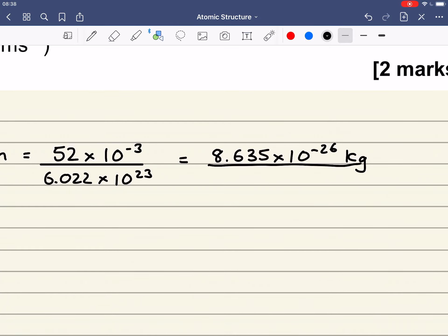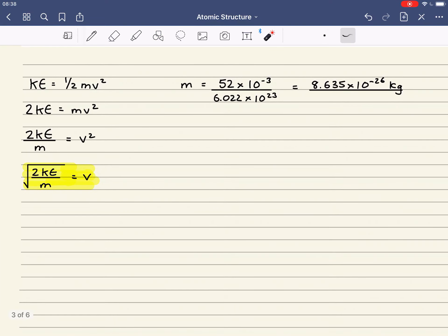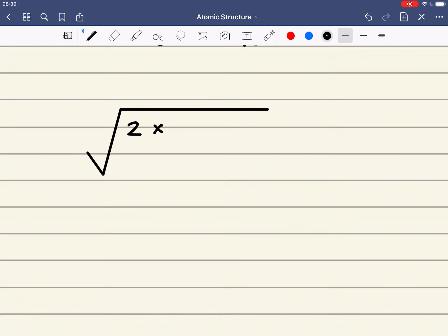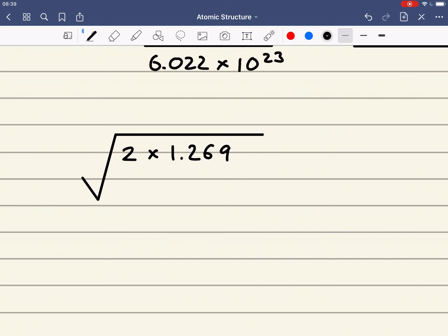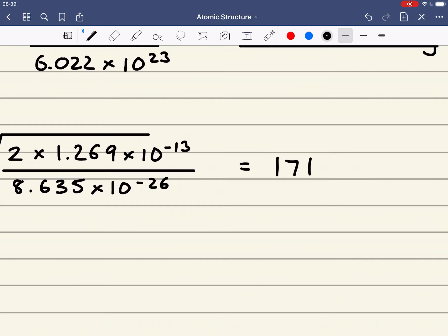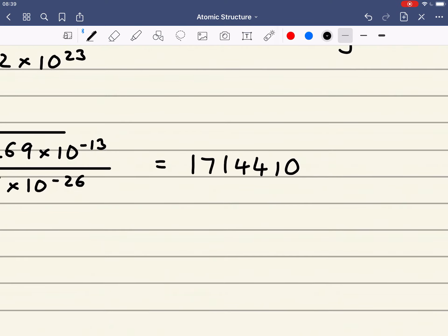And when you do that calculation you get an answer of 8.635 times 10 to the minus 26 kilograms. So now you've got your mass value, you can plug this mass value, this m value here into your equation. So what we have then is 2 times the kinetic energy which we'll just check is 1.269 times 10 to the minus 13. That's divided by this mass which is 8.635 times 10 to the minus 26. When you plug that into your calculator you should get an answer of 1714410. And that's in meters per second. Which is when we put it in standard form 1.71 times 10 to the 6 meters per second.